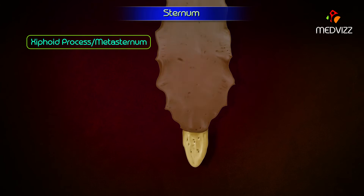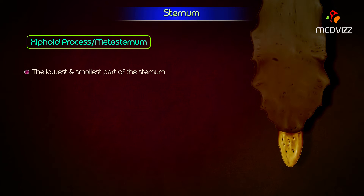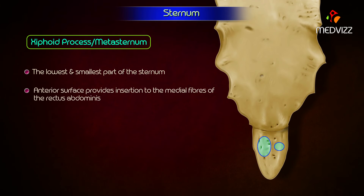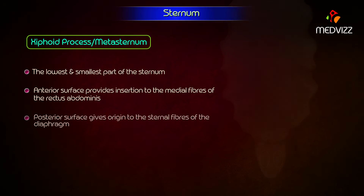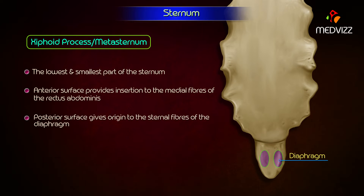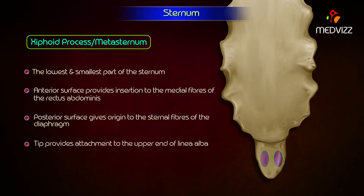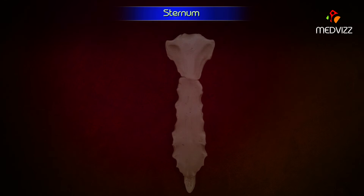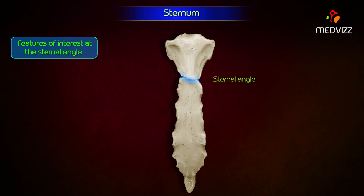Xiphoid process. It is the lowest and smallest part of the sternum. It varies greatly in size and shape and may be bifid or perforated. Its anterior surface provides insertion to the medial fibers of rectus abdominis. Its posterior surface gives origin to the sternal fibers of the diaphragm. Its tip provides attachment to the upper end of the linea alba.